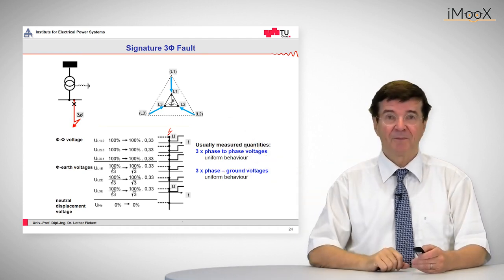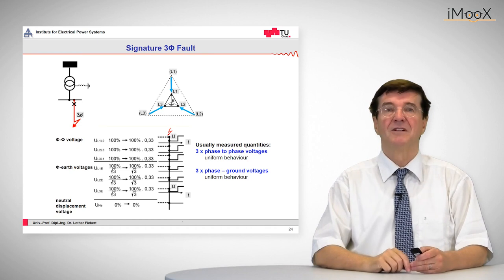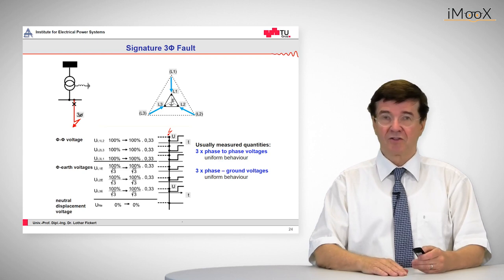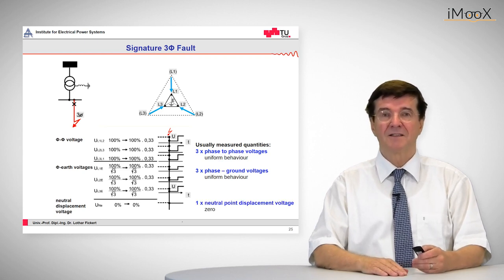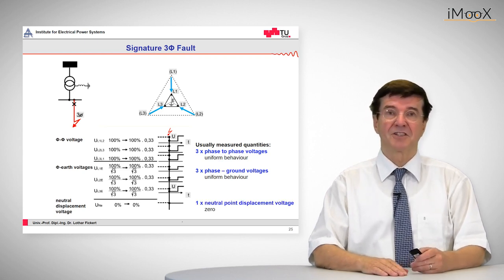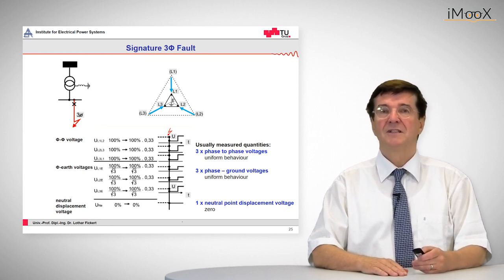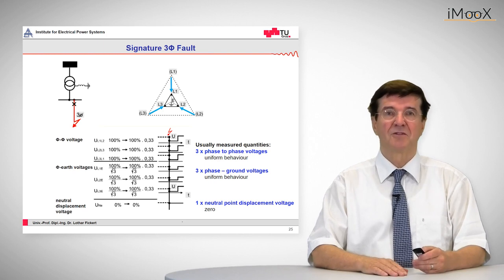The same happens to the second set of voltages, that is the phase-to-ground voltage. So these voltages also collapse uniformly and the third trace which is the neutral displacement voltage does not collapse at all because zero sequence is not involved in such a fault.